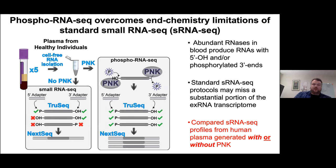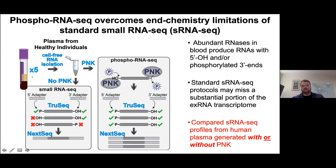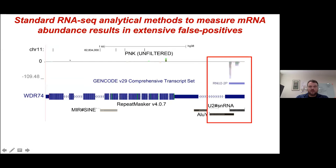We then wanted to apply the same methodology to plasma — to cell-free RNAs — and see what the population of RNAs looks like. We did this initially with plasma from just five healthy individuals.